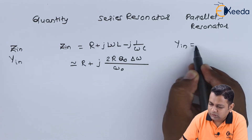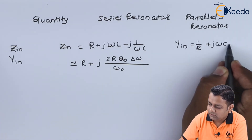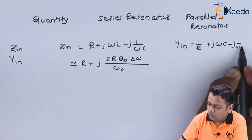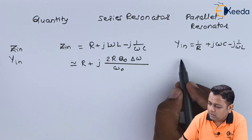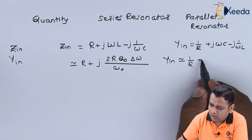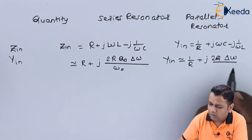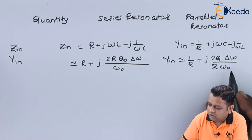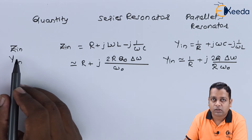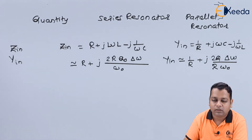For the parallel resonator, we use the input admittance Y_in instead of impedance. Y_in equals 1/R + jωC − j(1/ωL), which is approximated as 1/R + j·(2Q·Δω)/(R·ω0).